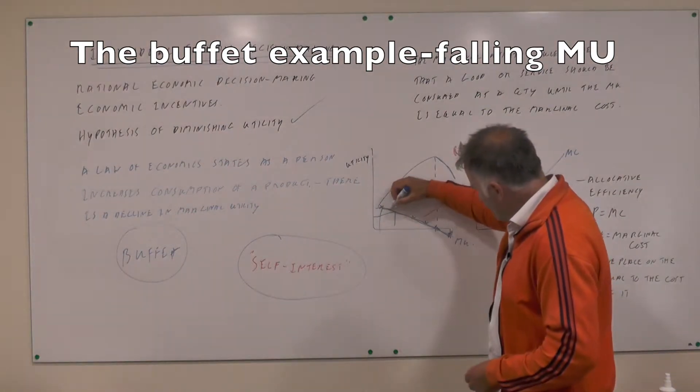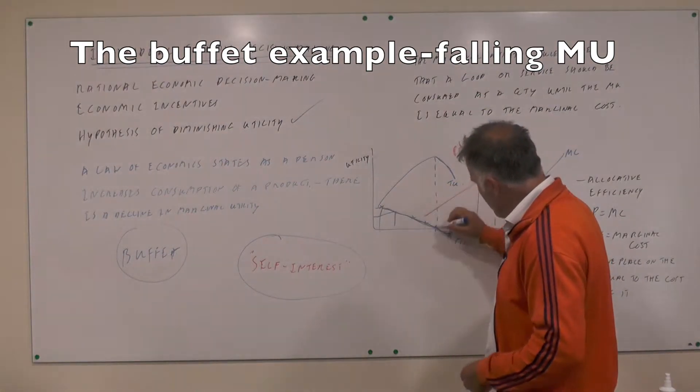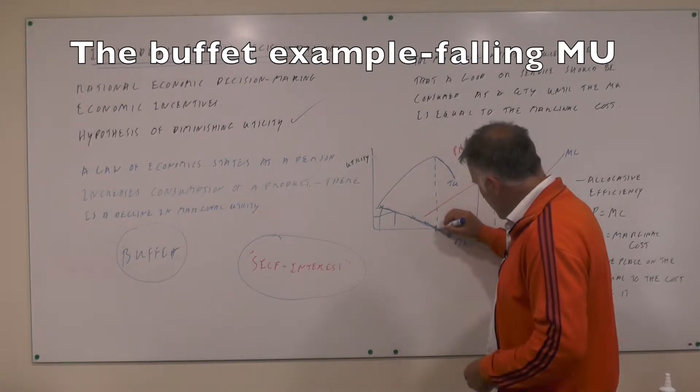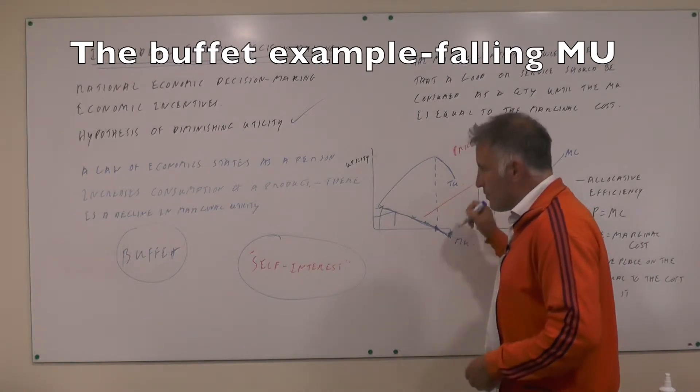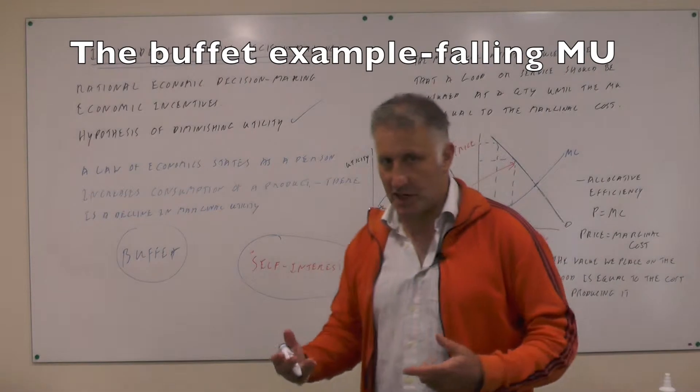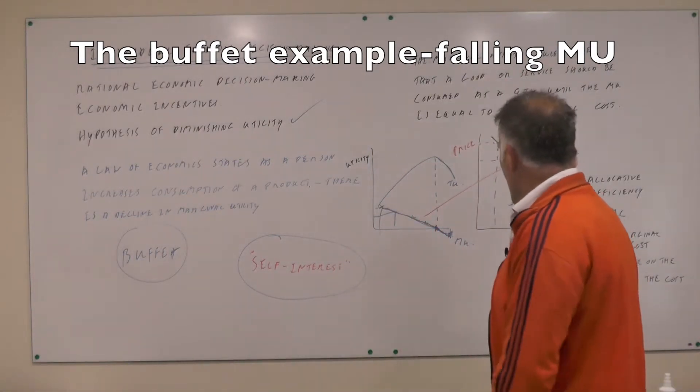This is this place here and you will stop eating. You will stop eating here because the marginal utility becomes negative. You don't want to eat any more. If you eat any more you'll probably throw up.